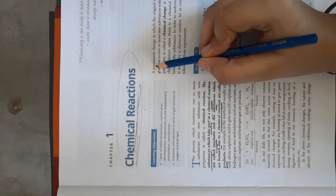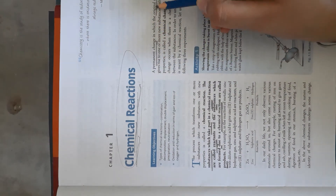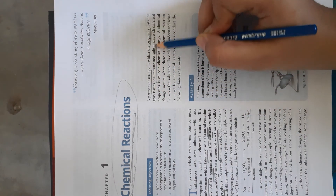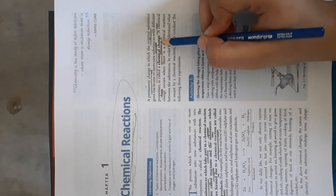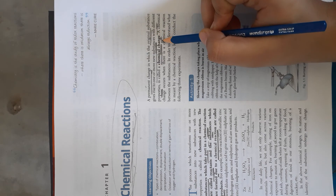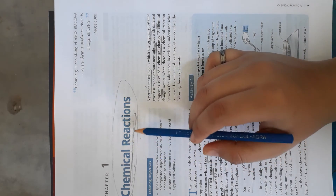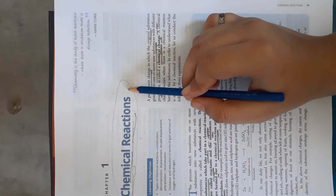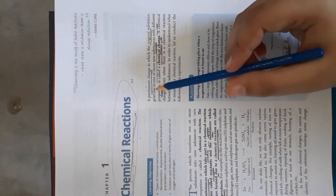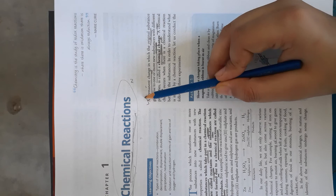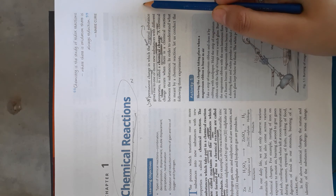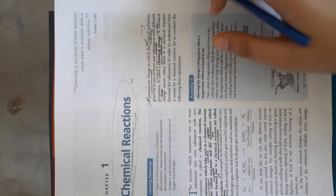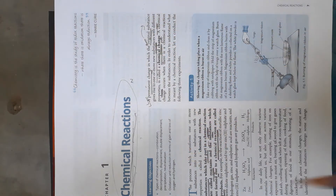Have a look in your book. It is a permanent change in which the original substance gives rise to one or more new substances with different properties; this is known as a chemical change. So, what is a chemical reaction? Any reaction which produces some new product with new properties is known as a chemical reaction or chemical change. It is a permanent change in which the original substance is converted into a new substance with new properties, and it is irreversible.